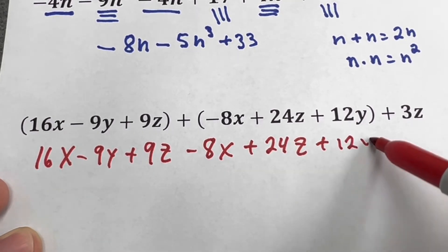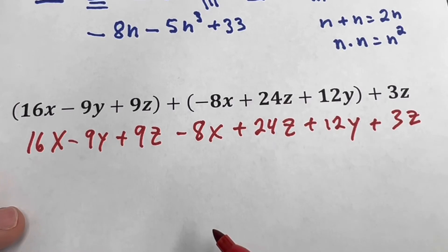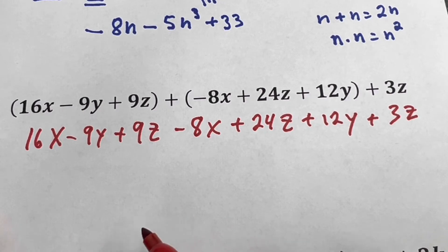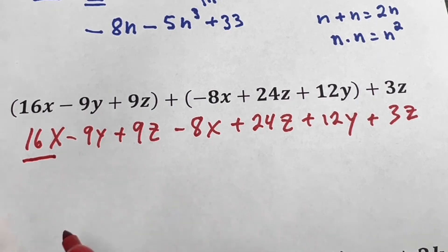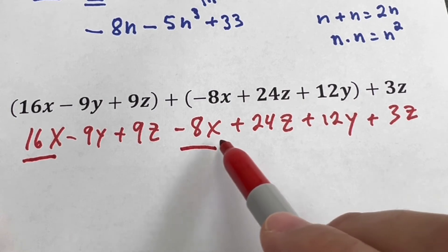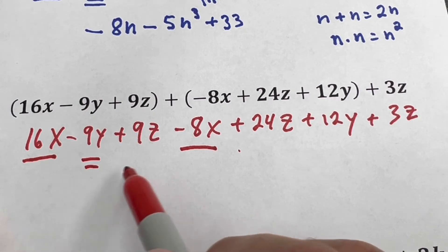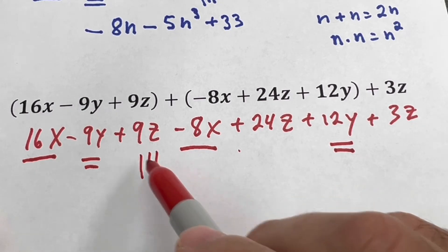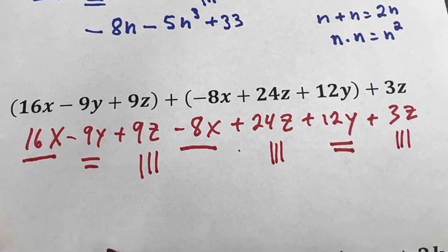...plus 12y plus 3z. That's what I said - you should underline different like terms because you see this long expression is very easy to get confused. If you take the time first to underline, that's like planning or prepping to do the exercise. So x, I have another x here, that's it. I have a y here, I have another y here.